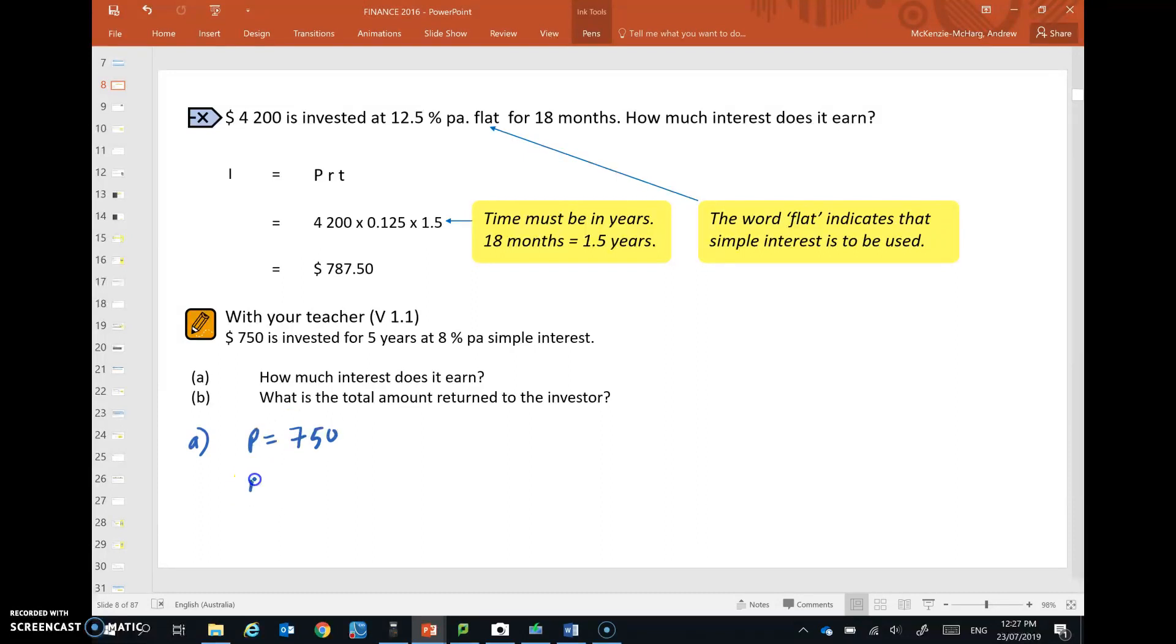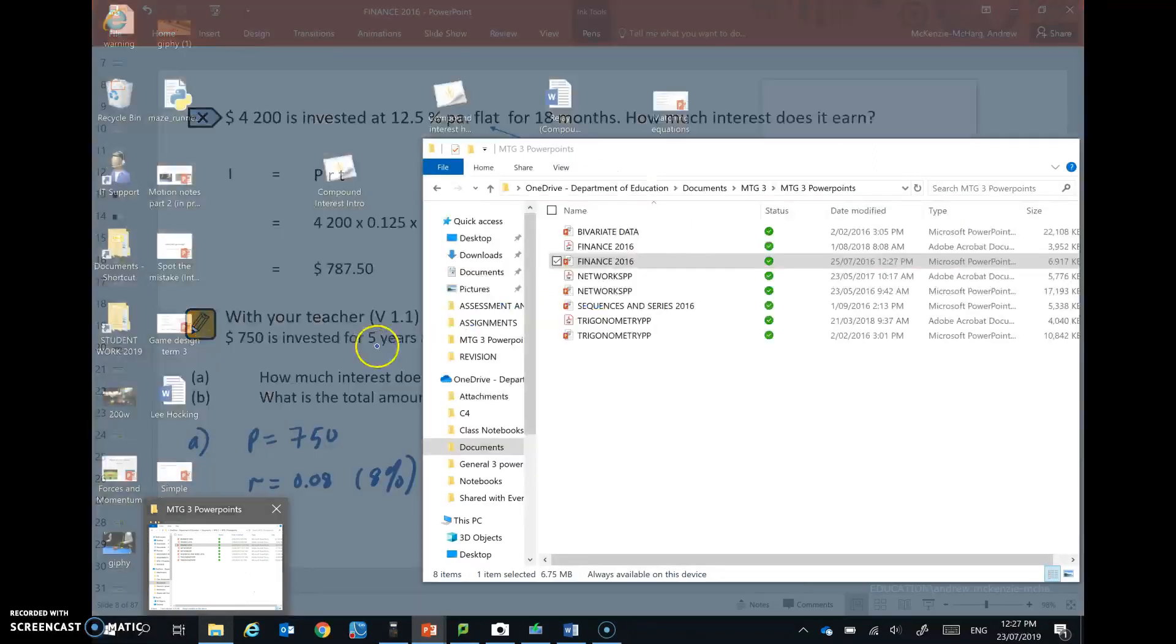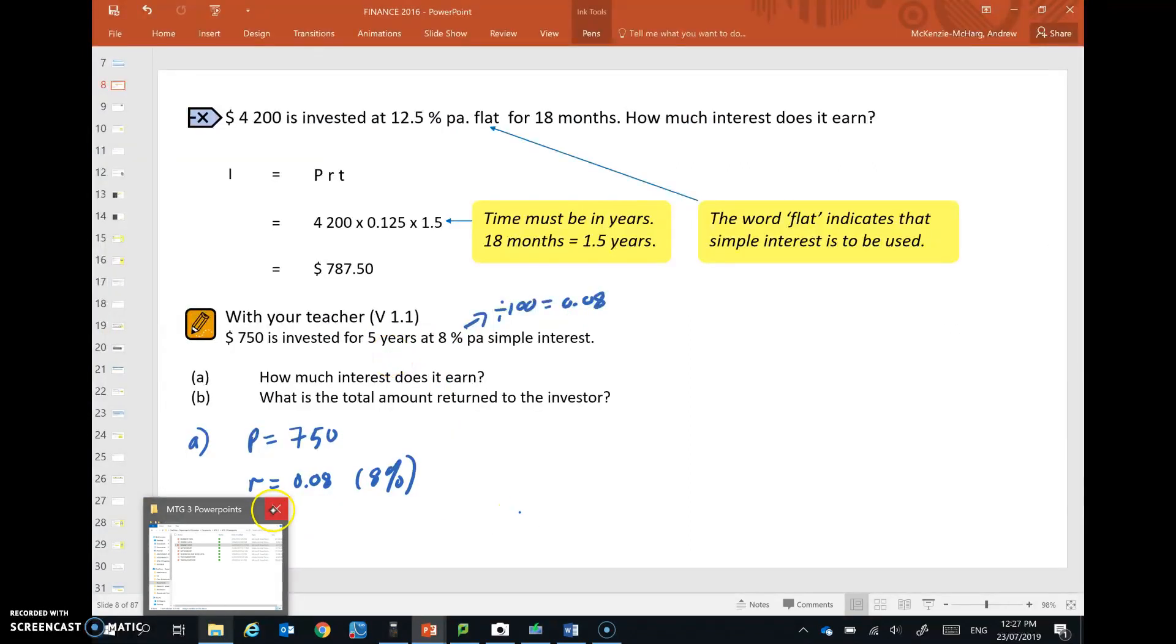Our R value, our rate, is 8%. So if we divide that by 100, we get 0.08, which is our 8% per annum. And the time here is given in years. So time T equals 5 years. We don't need to adjust that at all, because it's given in years. So the amount of interest is equal to the principal times the rate times time, those three multiplied. So let's see what we get for that.